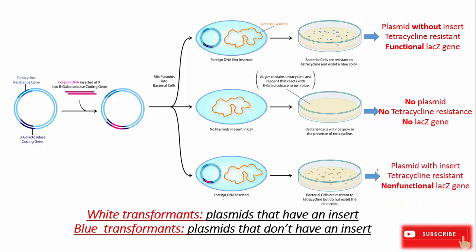In this case, the plasmid has the insert and is tetracycline resistant, but has a non-functional lacZ gene. White transformants indicate that they have our insert, while blue transformants indicate that the plasmid does not have our insert.